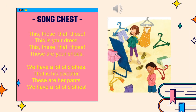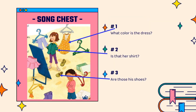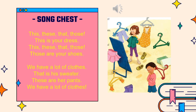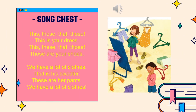Let's go to the song. Listen to Song Track 35 on page 55 and sing along. 'This, these, that, those — this is your dress. This, these, that, those — those are your shoes. We have a lot of clothes, we have a lot of clothes. That is his sweater, these are her pants — we have a lot of clothes.'